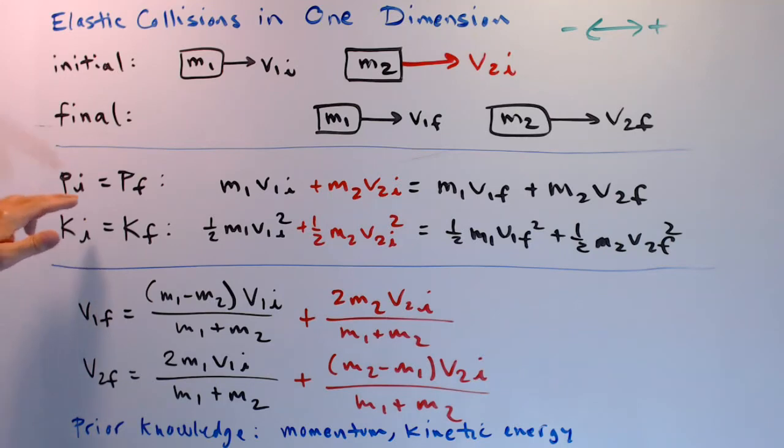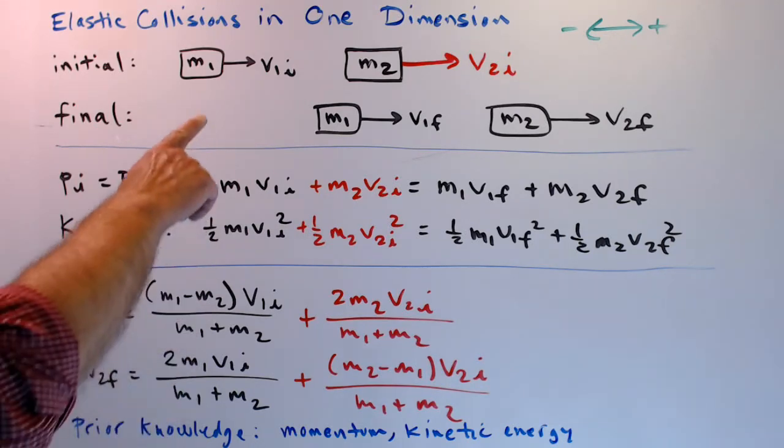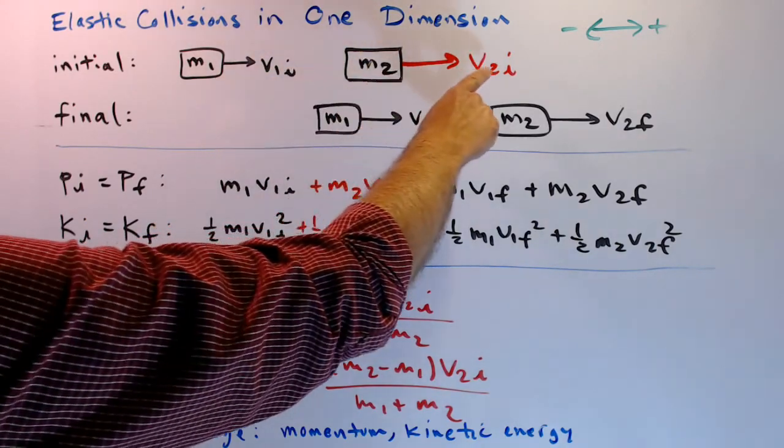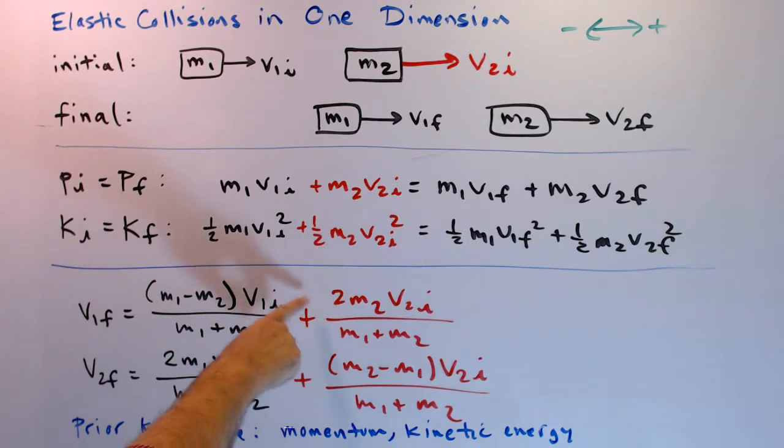All collisions conserve momentum, there it is, and elastic collisions conserve kinetic energy, there it is. If you combine these two equations and do a bunch of algebra, you eventually get these two equations. And these two equations are what people will use most of the time to solve elastic collision problems. In a typical problem you're given the values for mass one, mass two, v1 initial, v2 initial, and you substitute all of those things into here to find v1 final or v2 final.